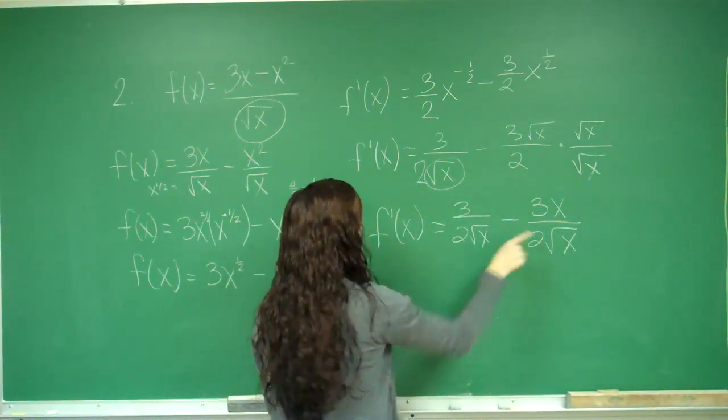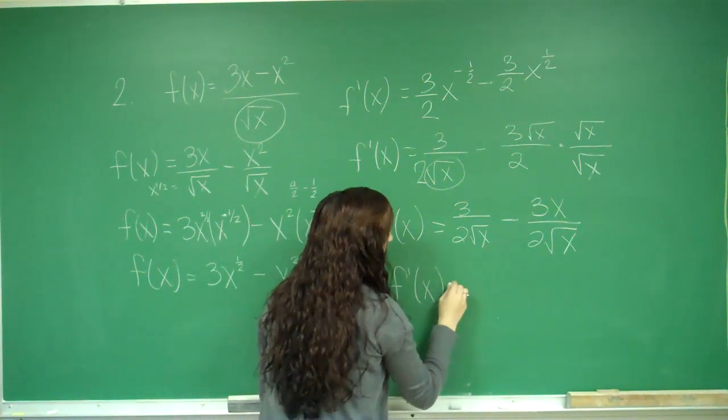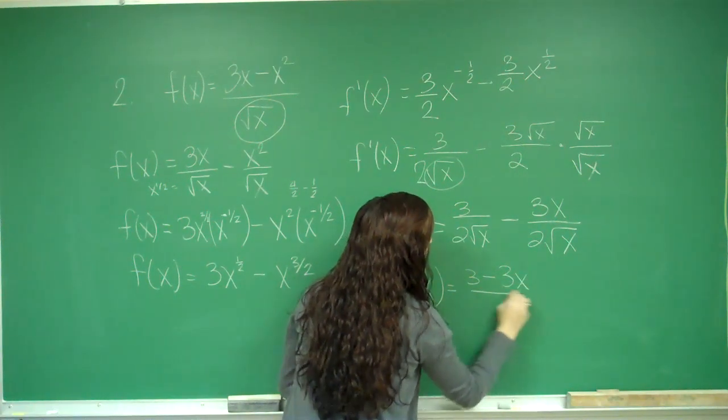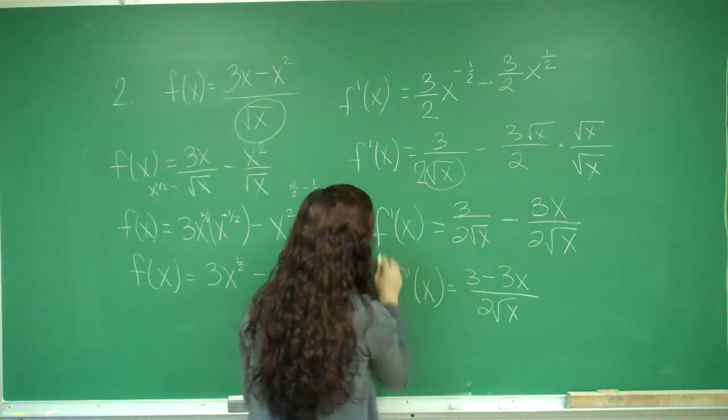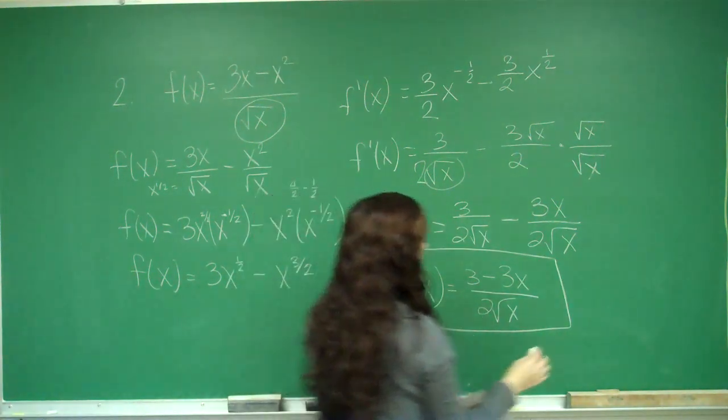Now they both have the same denominator, so I write it as one fraction. f the derivative of x is 3 minus 3x over 2 square root of x. And that would be your final answer. And that is choice E.